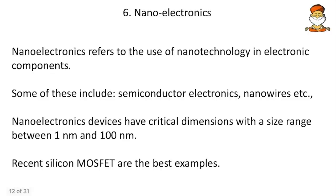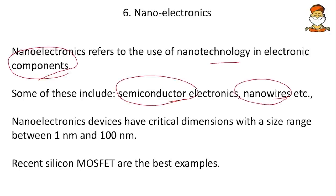Nanoelectronics refers to the use of nanotechnology in electronic components, including semiconductors and nanowires. Gold nanoparticles and graphene are good conductors of electricity. For semiconductors, a PNP transistor can be prepared: we start with gold nanoparticles that have electrons throughout.